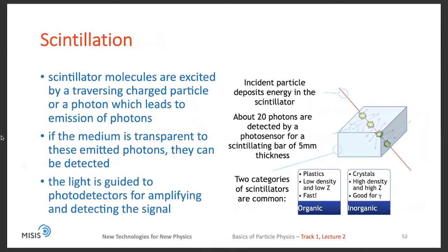The second important mechanism is scintillation. Basically, scintillator molecules are excited by a traversing charged particle or a photon, which leads to emission of more photons. Then, if the medium itself is transparent to the emitted photons, they can be detected. The light is usually guided to photodetectors for amplifying and detecting the signal.